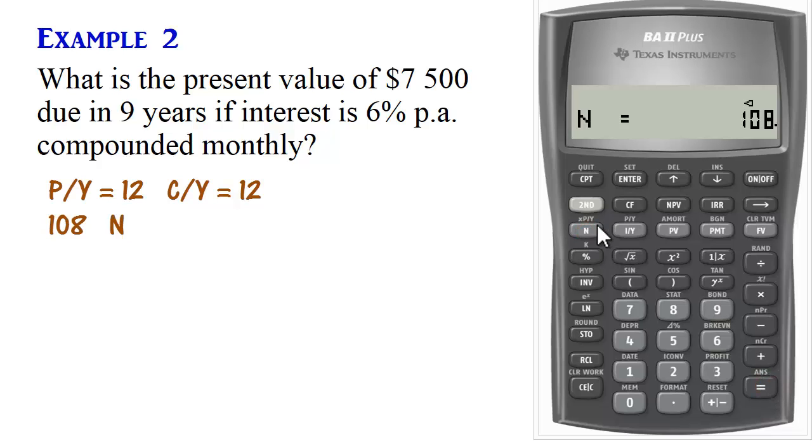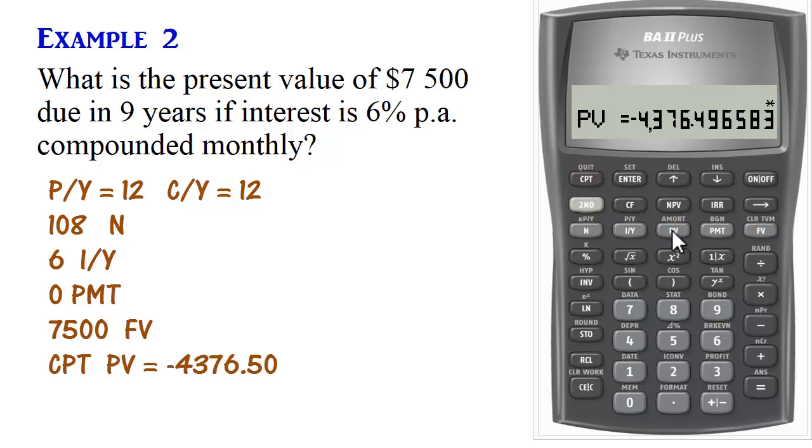Interest rate is 6% per annum. So we'll press 6 I/Y. If you did not clear time value of money at the beginning, you can just do 0 payment. And then our future value is 7,500. So 7,500 future value. And then compute present value. So the present value is $4,376.50.